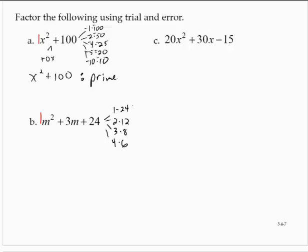So they have a sum of 25, 14, 11, 10. There's no way I can get the 3 out of this. So m squared plus 3m plus 24 is also—I shouldn't put an equal sign there. It's not a correct statement. I'll just say that this is prime.